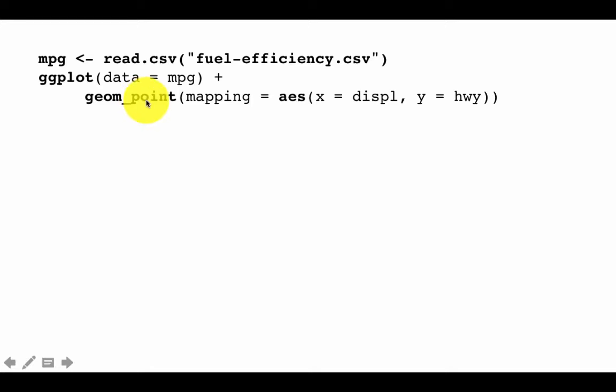In other words, what we are saying is, I want to first create the empty plot, which is what happens when you do ggplot data equals MPG. And on top of that, I want to add a layer of points, and it's called geom point. And to get a layer of points, you use the function geom point.